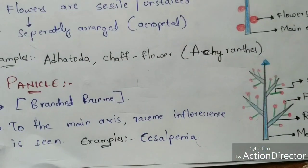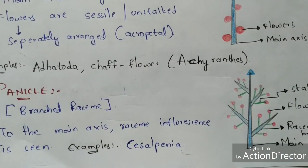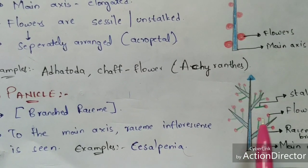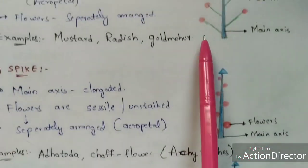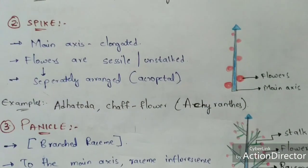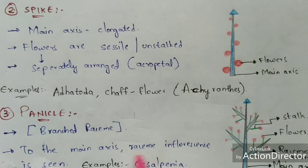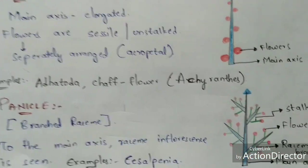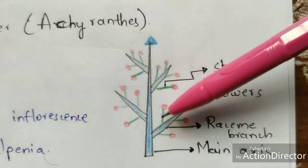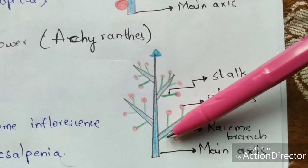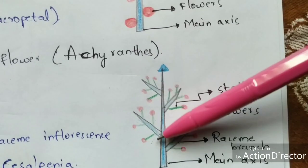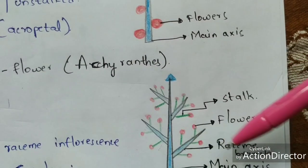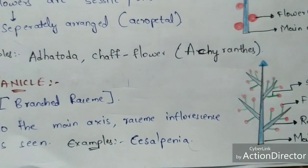Coming to the third type — panicle. Panicle is called a branched raceme. It is similar to raceme, but it is branched — raceme branches are attached to the main axis. To this main axis, raceme branches can be seen. The flowers are arranged in an acropetal manner and consist of stalks (shown in green). The best example of panicle is Caesalpinia.